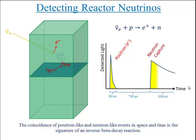The coincidence of positron-like and neutron-like events in space and time is the signature of an inverse beta decay reaction.